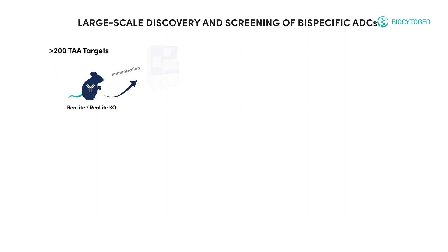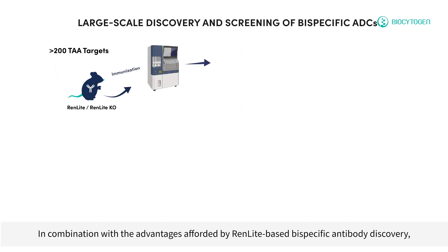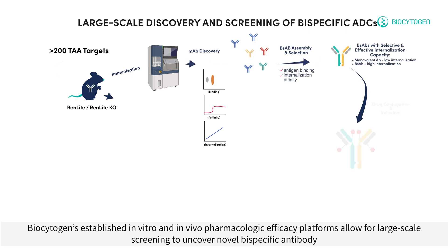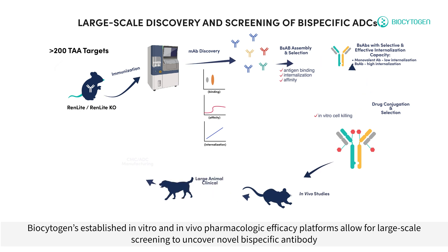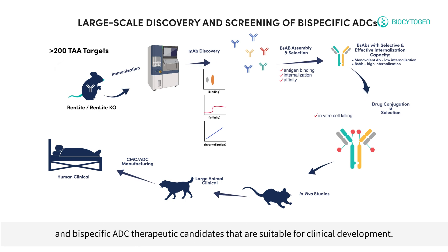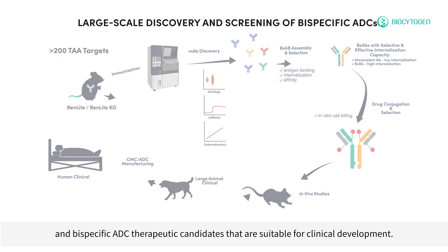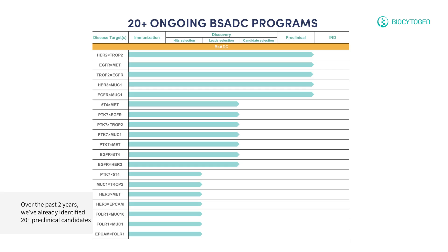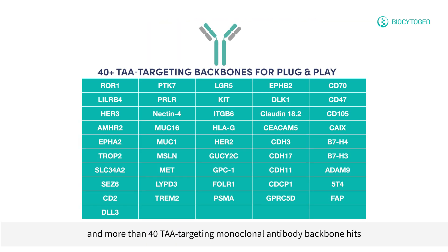In combination with the advantages afforded by RenLite-based bispecific antibody discovery, Biocytogen's established in vitro and in vivo pharmacologic efficacy platforms allow for large-scale screening to uncover novel bispecific antibody and bispecific ADC therapeutic candidates that are suitable for clinical development. Over the past two years, we've already identified over 20 preclinical candidates and more than 40 TAA-targeting monoclonal antibody backbone hits ready for bispecific antibody and bispecific ADC assembly.